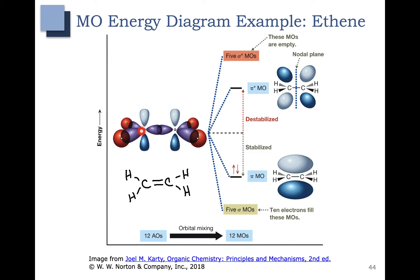These come from the five sigma bonds. There are also five sigma antibonding molecular orbitals, so again we have 12 atomic orbitals mixing to form 12 molecular orbitals. The 12 atomic orbitals include the four s orbitals from the hydrogens, the six sp2 hybrid orbitals from the carbons, and the two p orbitals from the carbons. Our system has 12 electrons: 10 of those electrons fill the sigma bonding molecular orbitals, and two fill the pi bonding molecular orbital.